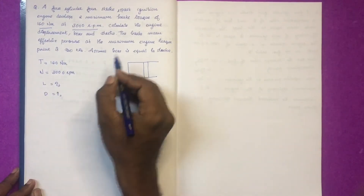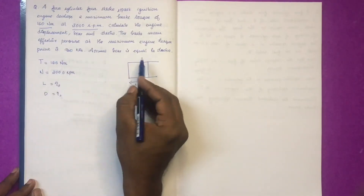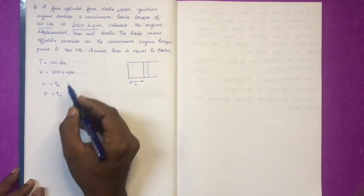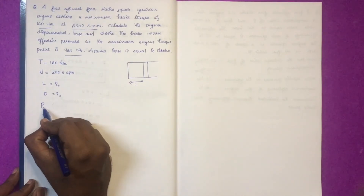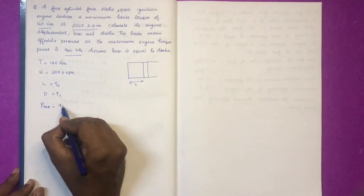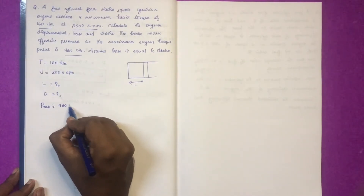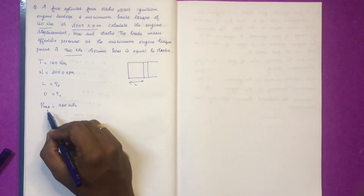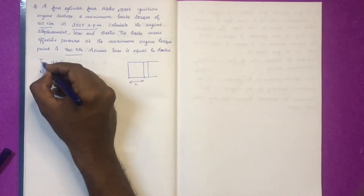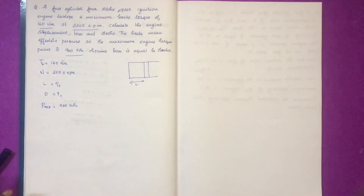The bore diameter is given. The brake mean effective pressure at the maximum engine torque point is 960 kPa. The mean effective pressure is equal to 960 kPa. We will find out how to calculate this.